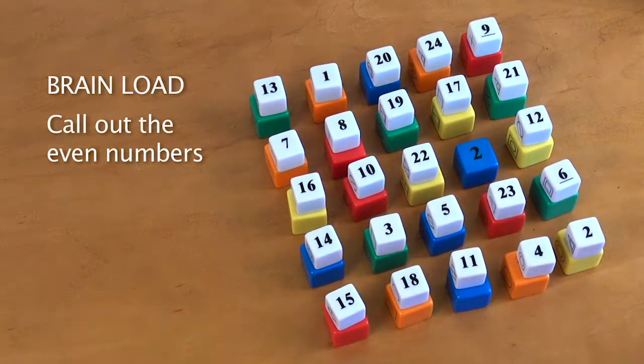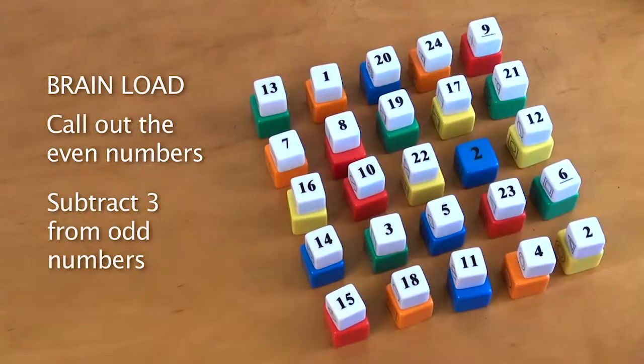Now add a brain load. You'll still call out the even numbers when you move, but when you land on an odd number you'll subtract 3.